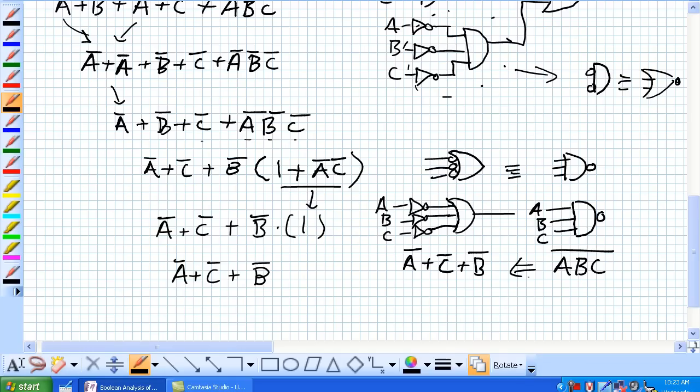Because then this is just De Morgan's Theorem in reverse, OK? Because this whole thing, A and B and C with a complementation can be written as the complement of the variables, the complement of the Boolean sum of the variables, OK?